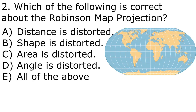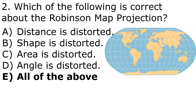The next question is on map projections. The correct answer is E, all of the above. The Robinson map projection is one of those projections that distorts a little bit of everything. Map projections are created because we're putting a 3D surface onto a 2D map, so things won't look the way they're supposed to. Distance, shape, area, and angle are the four things that can be distorted. Shape is not distorted as much as distance or area, but angle is distorted a lot, as you can see with the lines having different angles as you move east, west, north, or south.